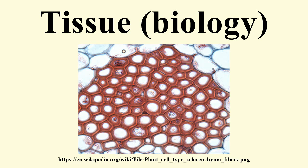Lateral meristem consists of cells which mainly divide in one plane and cause the organ to increase in diameter and growth. It usually occurs beneath the bark of the tree in the form of cork cambium, and in vascular bundles of dicots in the form of vascular cambium. The activity of this cambium results in the formation of secondary growth. Intercalary meristem is located in between permanent tissues, usually present at the base of node, internode, and on leaf base. They are responsible for growth in length of the plant and increasing the size of the internode, resulting in branch formation and growth.